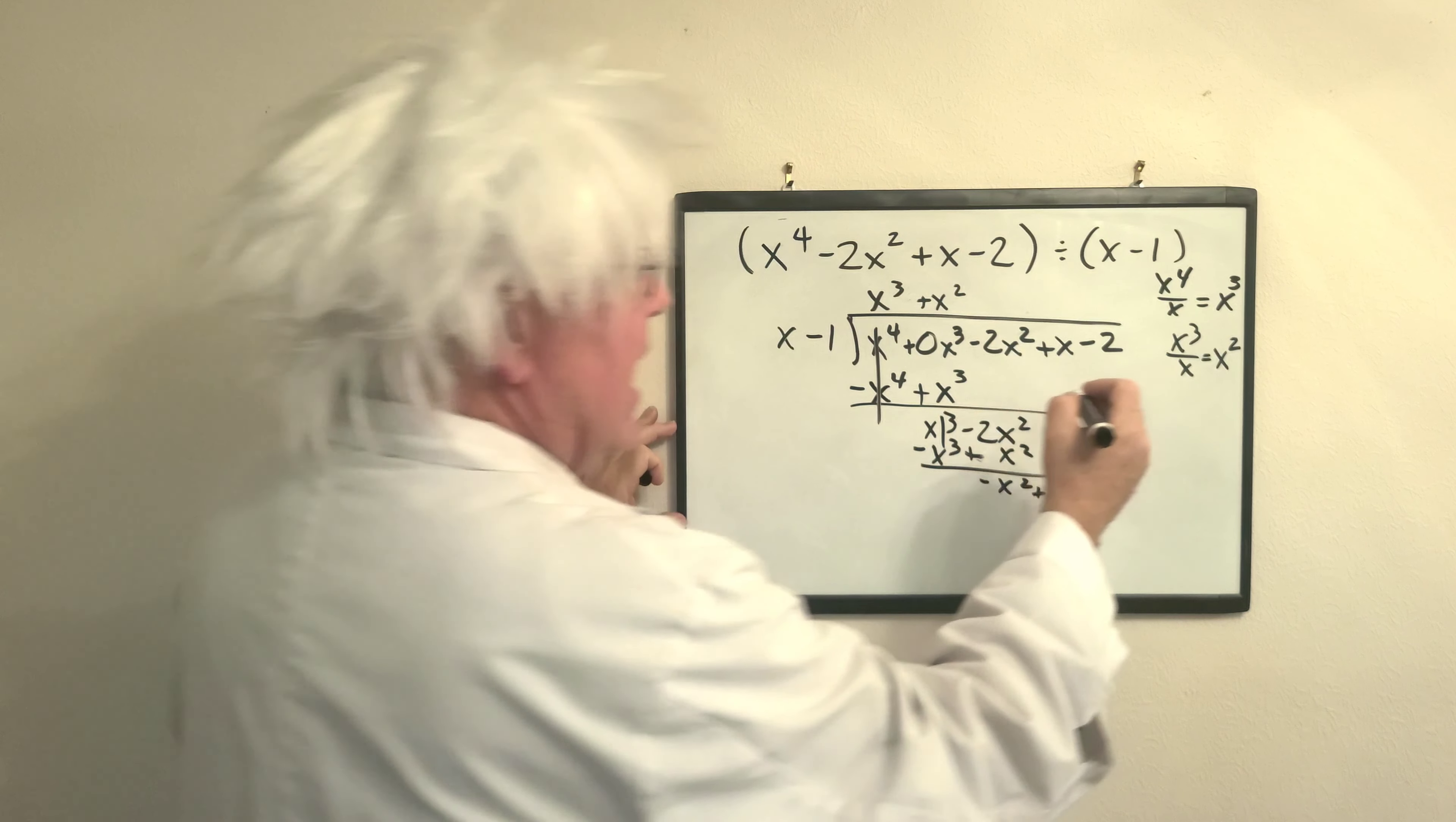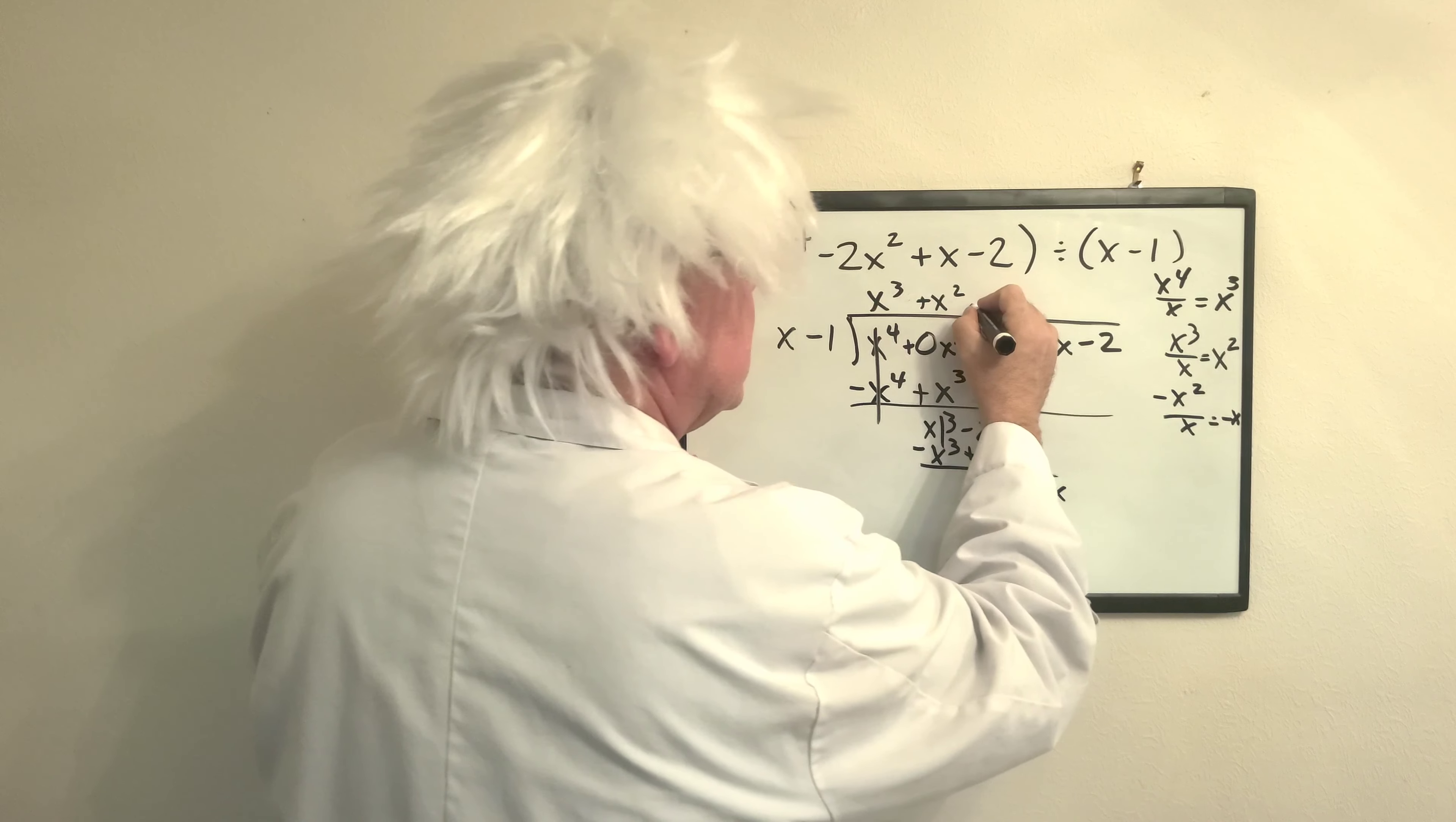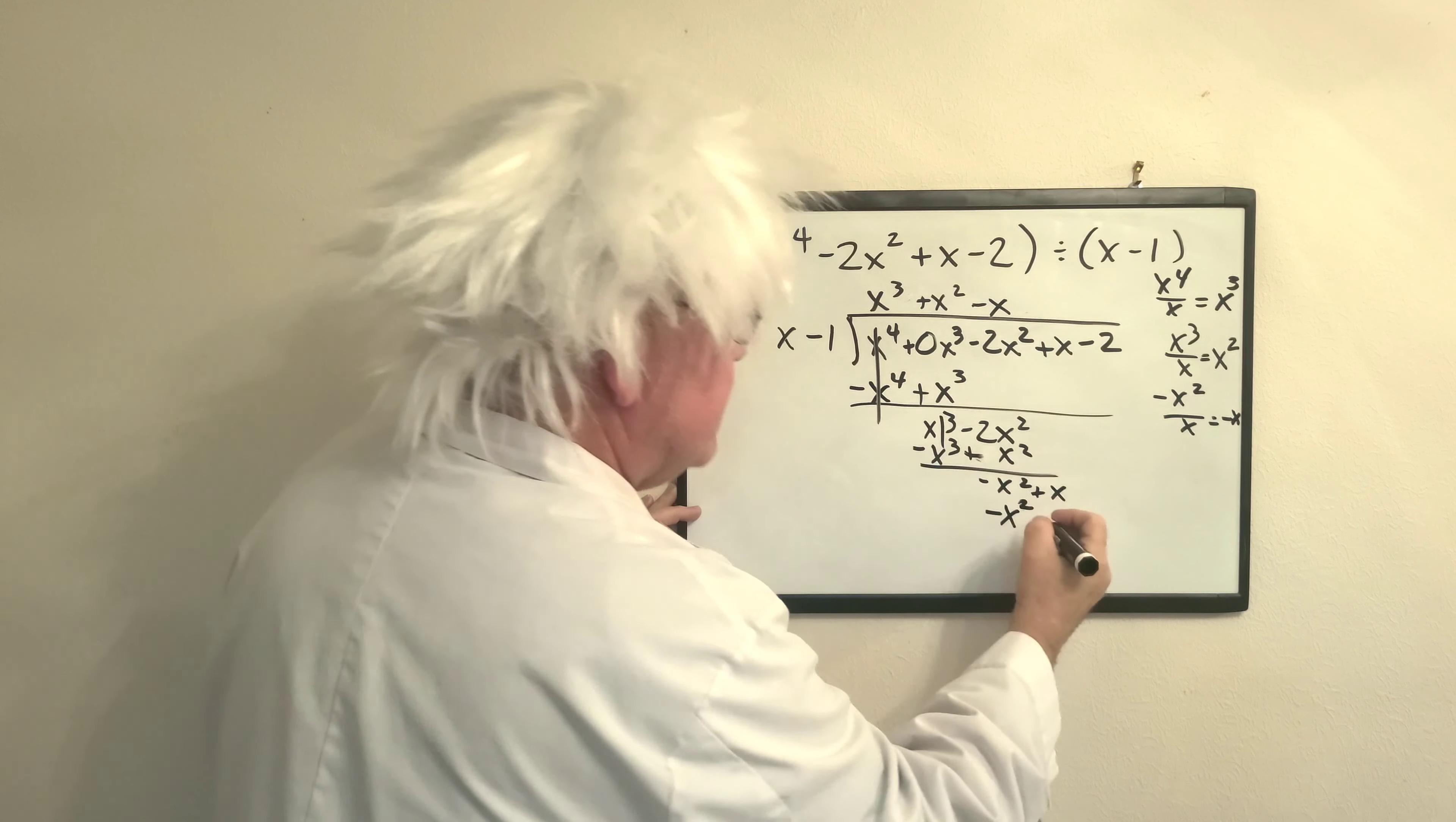How many times does x go into negative x squared? That would be negative x times. So I put negative x here. Okay? Everybody with me? Now, negative x times x is negative x squared. And negative x times negative x...